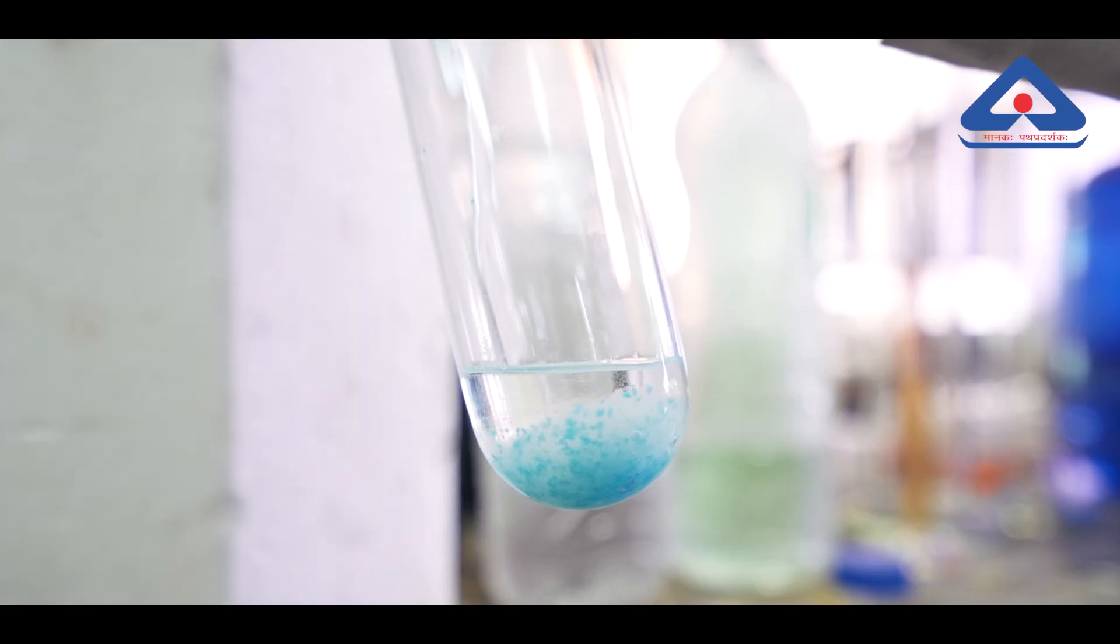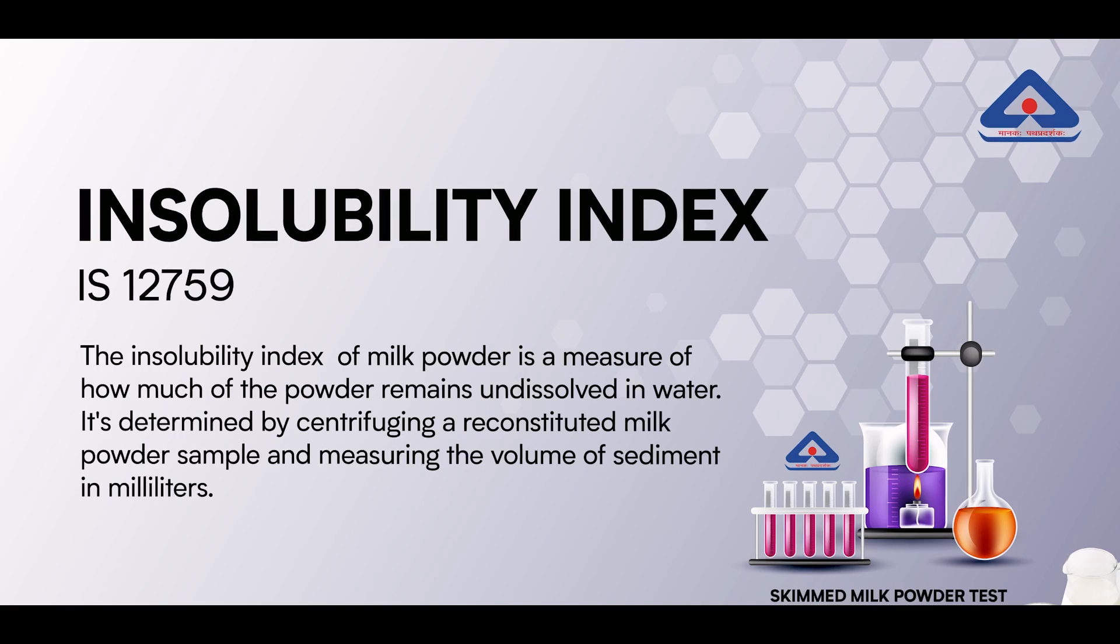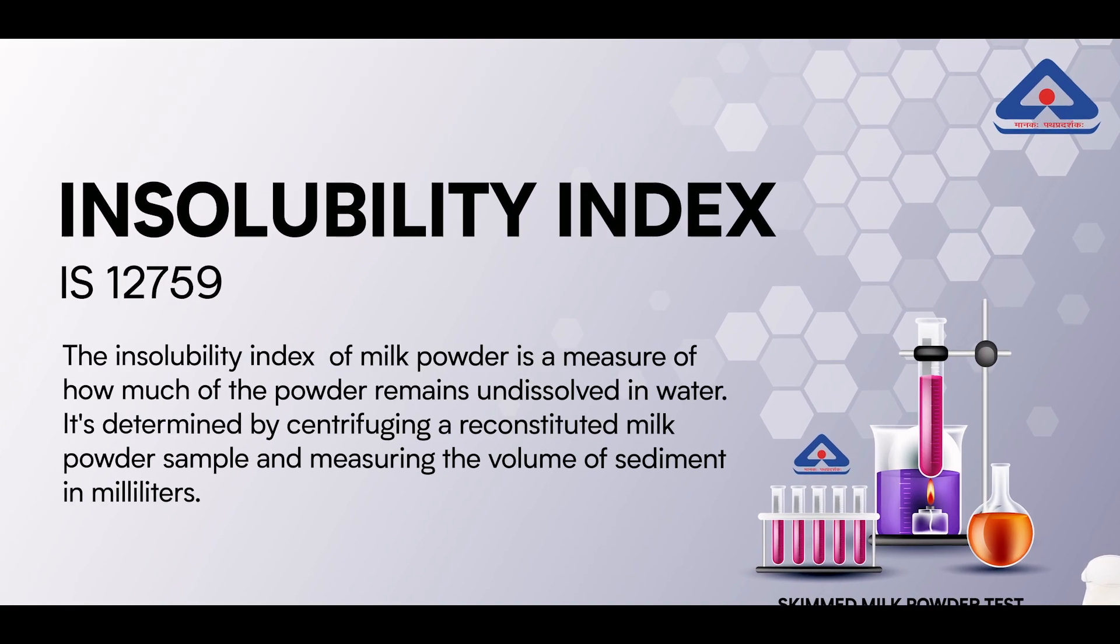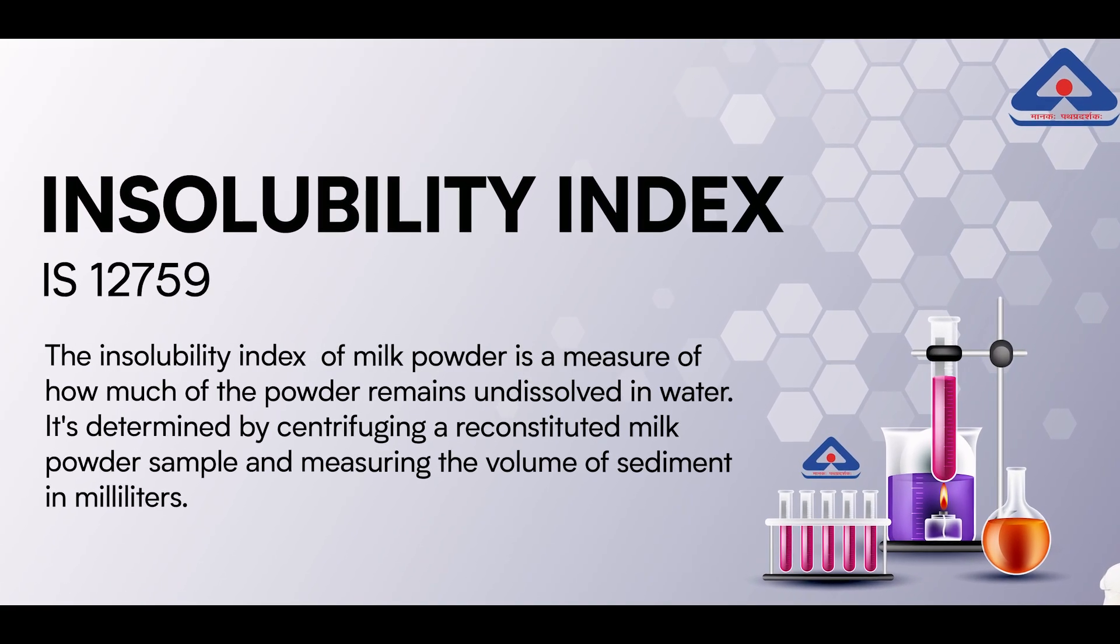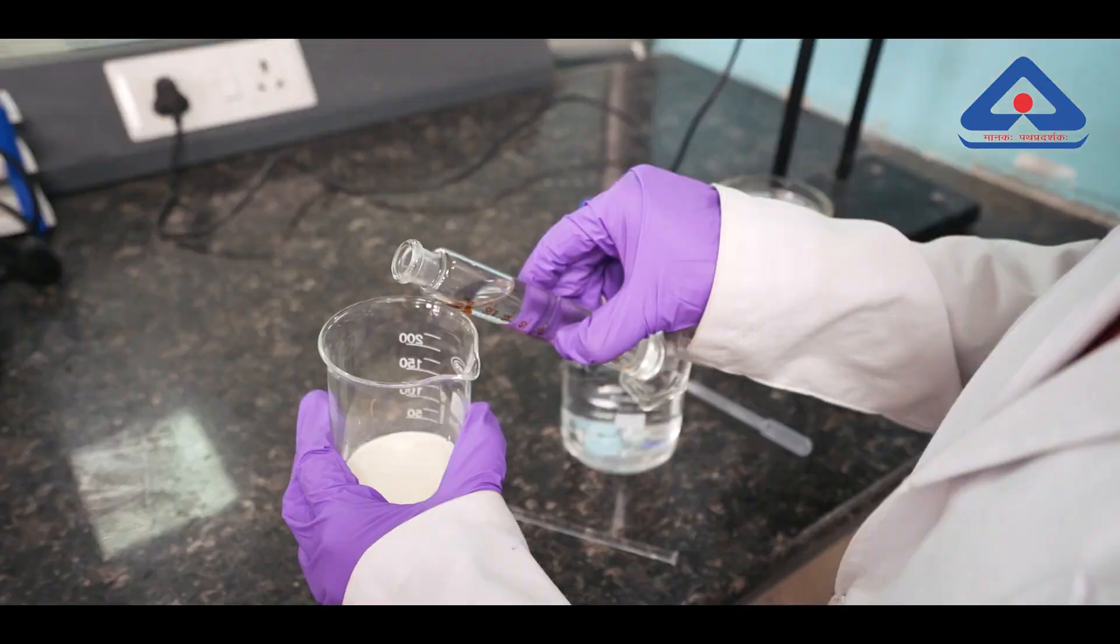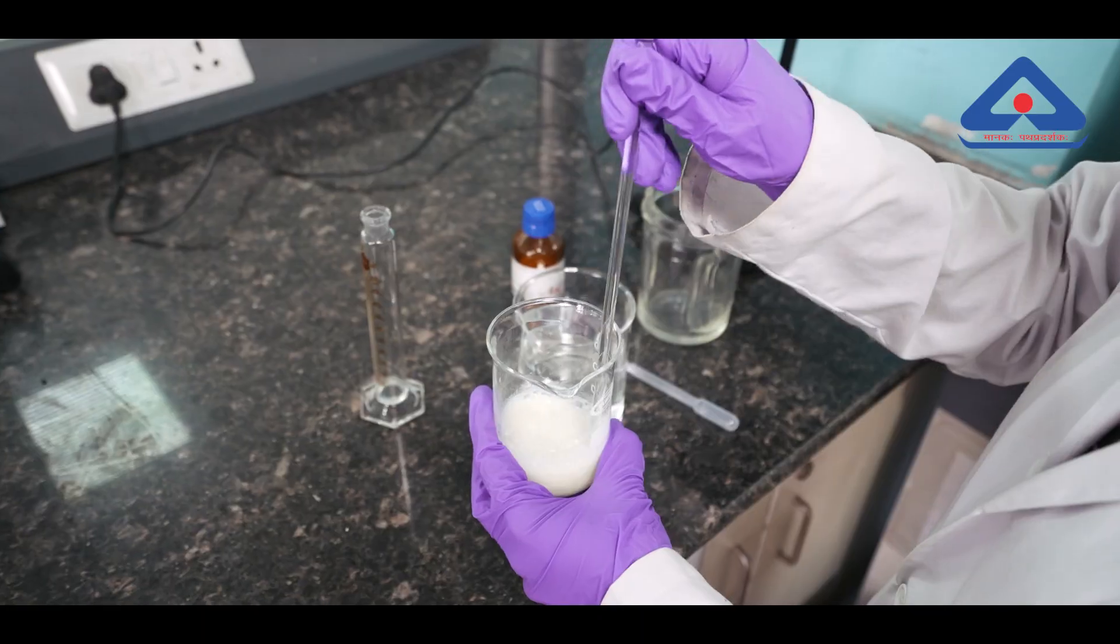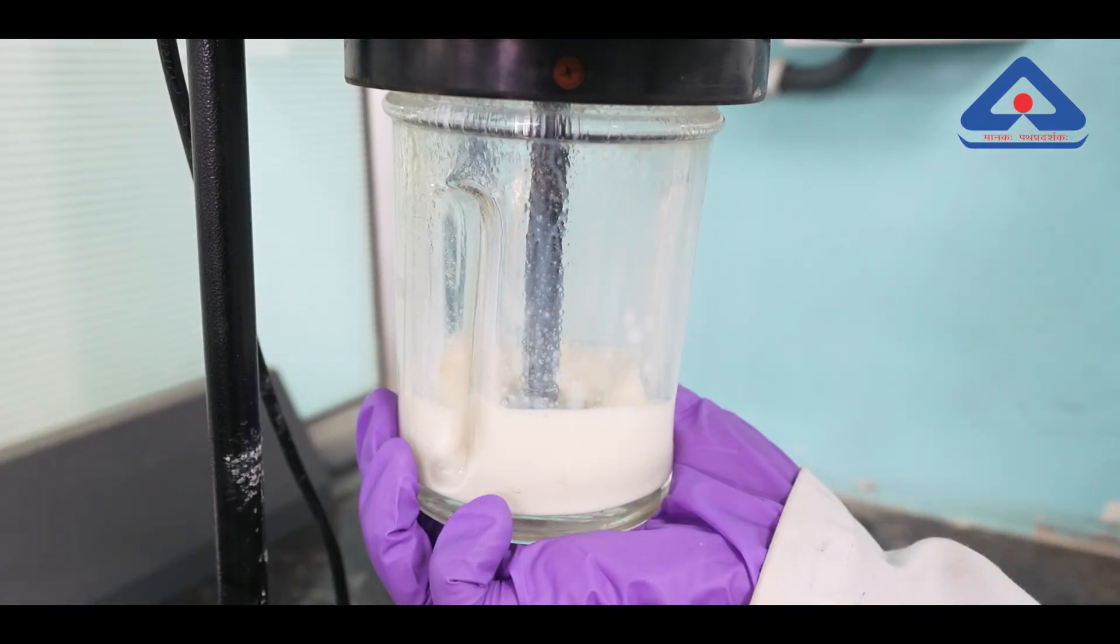Number five: Insolubility index, IS 12759. To ensure SMP dissolves easily, this test checks its solubility in water. The sample is dissolved in water at 24 degrees Celsius and then centrifuged. The settled particles should be less than 2 ml.